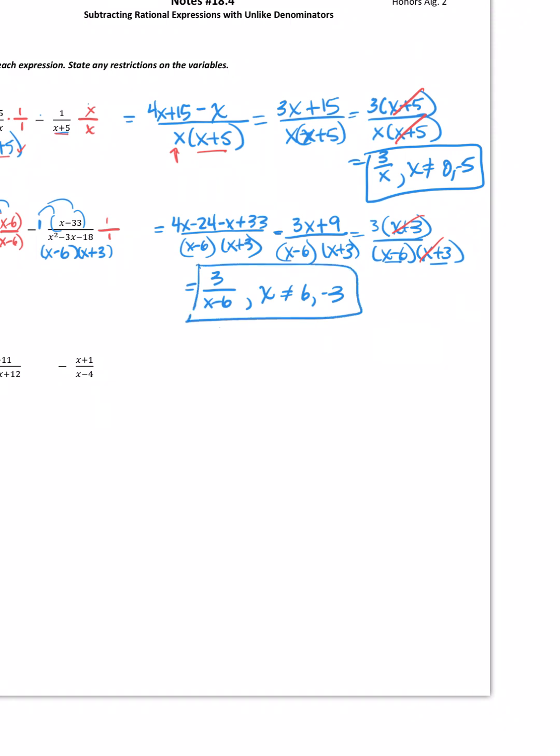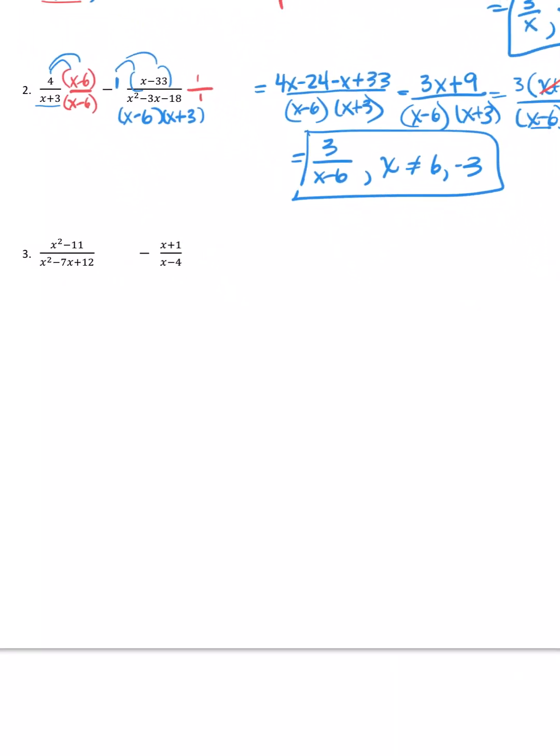Let's try one more example. All right. The first one on this looks like it needs to be factored out pretty good. Now, x squared minus 11 kind of looks like a difference of squares, but 11 is not a perfect square. So, there's nothing I could do with that. But the denominator definitely can be factored. Two numbers that multiply to 12, but add to a negative 7. So, that would be a 3 and a 4, both being negative. So, x minus 3, x minus 4.